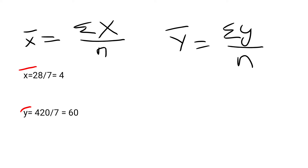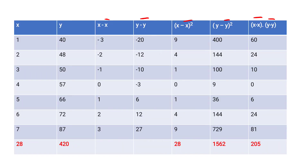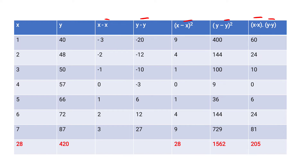Next, subtract x̄ from each x value: 1 − 4 = −3, 2 − 4 = −2, 3 − 4 = −1, 4 − 4 = 0, 5 − 4 = 1, 6 − 4 = 2, 7 − 4 = 3. Then subtract ȳ from each y value: 40 − 60 = −20, 48 − 60 = −12, 50 − 60 = −10, 57 − 60 = −3, 66 − 60 = 6, 72 − 60 = 12, 87 − 60 = 27.